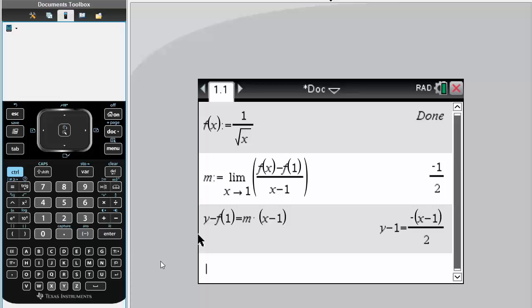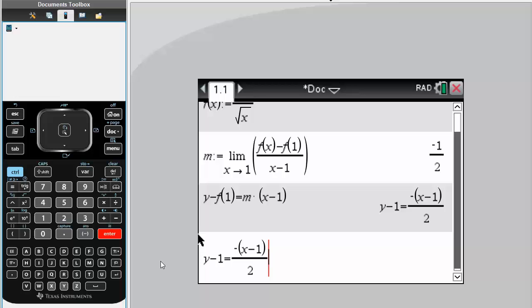We're going to get this value, put a bracket over the entire thing, and make it y equals. By adding one to each side, we'll have it in y equals form, which is much simpler.